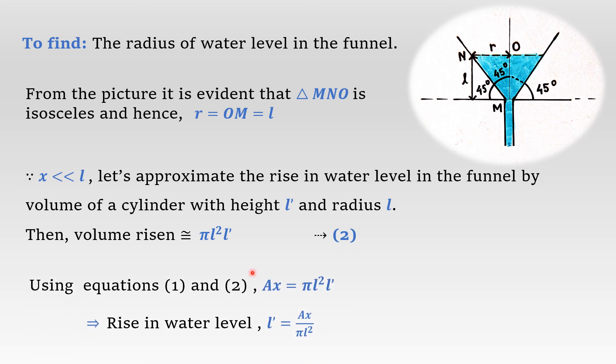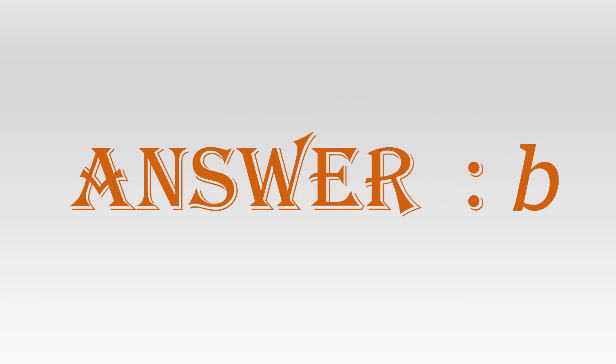Using equations 1 and 2, we get Ax = πl²·l. This implies that the rise in water level denoted by l equals Ax/πL². Hence, option B is the right answer.